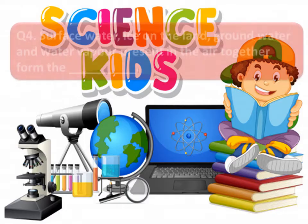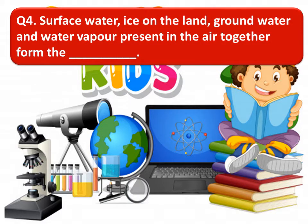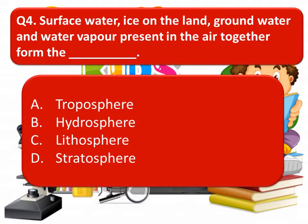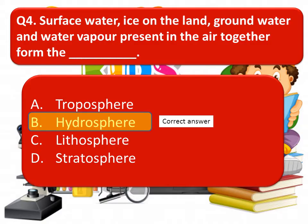The next one is: surface water, ice on the land, ground water, and water vapor present in the air together form the blank. The options are: troposphere, hydrosphere, lithosphere, or stratosphere. The correct answer is hydrosphere.